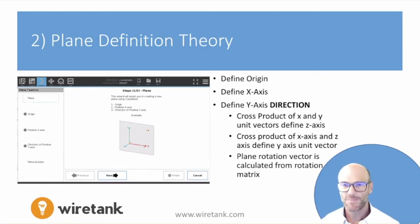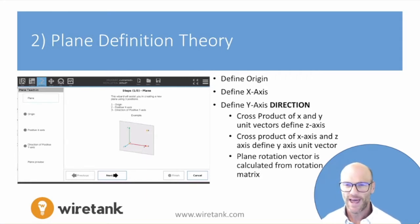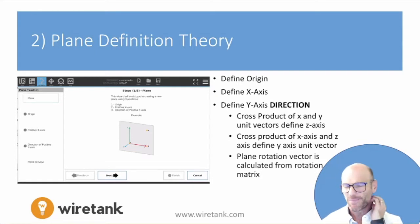Now that we've defined TCP position and orientation, we're going to talk about the theory of planes, especially the subtleties that will matter to you as you define your projects. Notice that in order to define your plane, you don't have to have a TCP orientation, just the correct position offset for your TCP. We're going to talk about how to define the origin, the x-axis, and the y-axis direction, and how the cross products of these things are going to define your plane and why that matters.